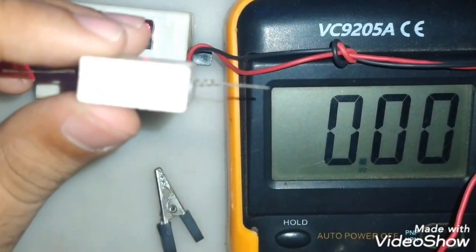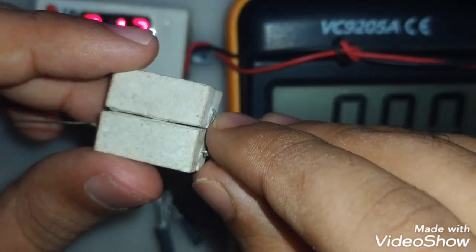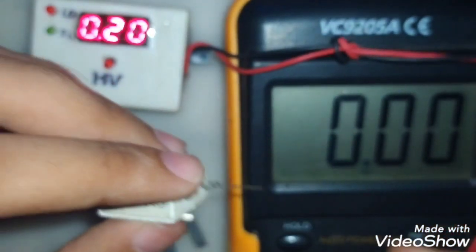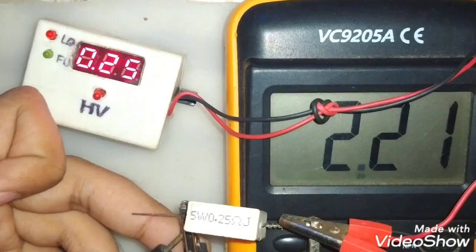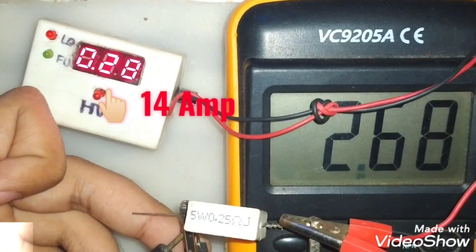So I will use 0.01 ohm resistor to measure current up to 10 amp, but it can show current from 1 amp to 10 amp. Below 1 amp it will not show any number but it can show very high current like 20 amp and more.